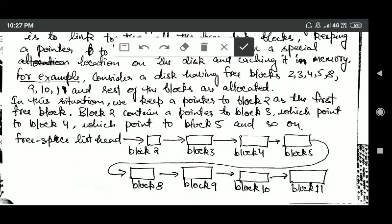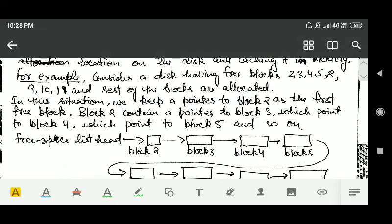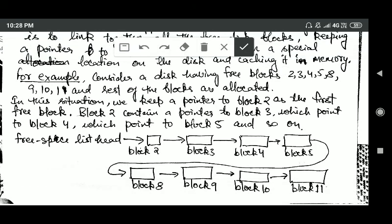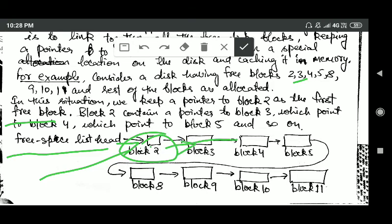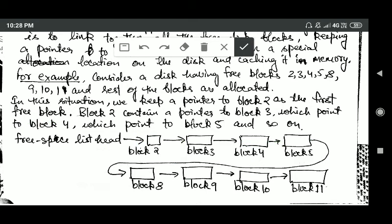Consider a disk where blocks 2, 3, 5, 8, 9, and 11 are free and the rest are allocated. In this case, we keep a pointer to the second block as the first free block. The second block contains a pointer to the third block, the third to the fifth, the fifth to the eighth, the eighth to the ninth, the ninth to the tenth, and the tenth to the eleventh. In this way a free space list is implemented using a linked list.